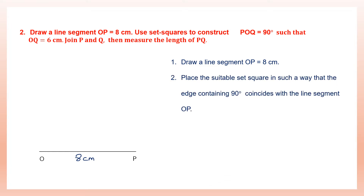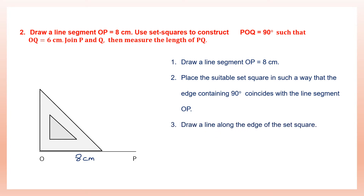Place the suitable set square — the one that will give you 90 degrees, since there are two types — in such a way that the edge containing 90 degrees coincides with the line segment OP. Draw a line along the edge of the set square. We have the 90 degree edge placed here and a line has been drawn. So we've got 90 degrees.